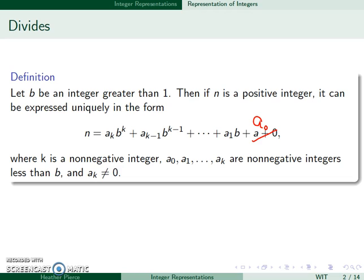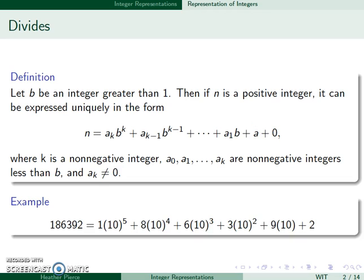When dealing with base 10, this is fairly easy. For instance, 186,392 equals 1×10^5 + 8×10^4 + 6×10^3 + 3×10^2 + 9×10 + 2. This comes from basic place value. The 2 is in the ones place so we multiply by 1, the 9 is in the tens place so we multiply by 10, then we have the hundreds, thousands, ten thousands, and hundred thousands.